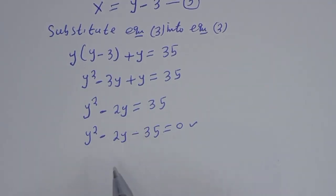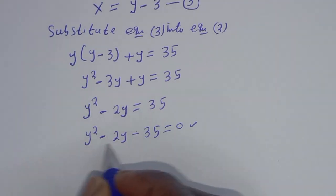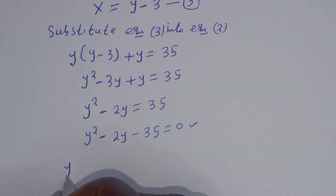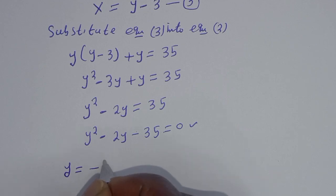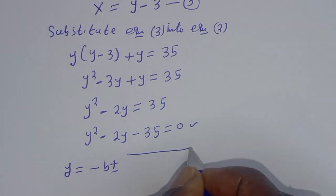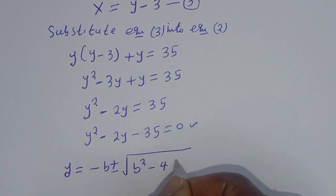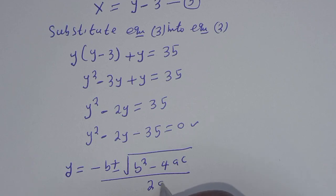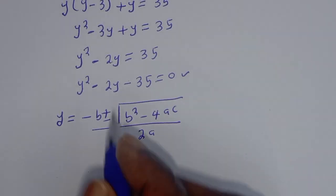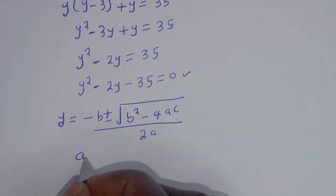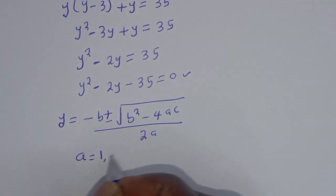In this case, I'm going to use the quadratic general formula, which gives us y equals negative b plus or minus the square root of b squared minus 4ac, all over 2a.